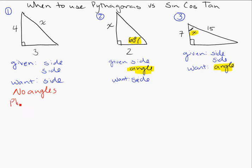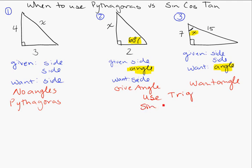So here we use Pythagoras. Here we're given angle. So we have some information about angles. Here we want an angle. So in both cases use your trig. Your sine, cosine, and tangent functions.